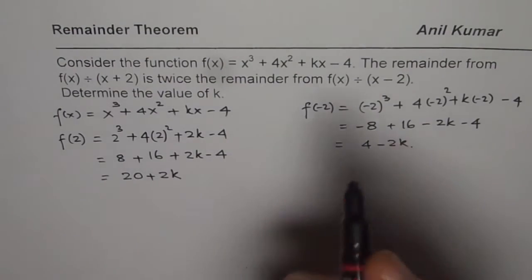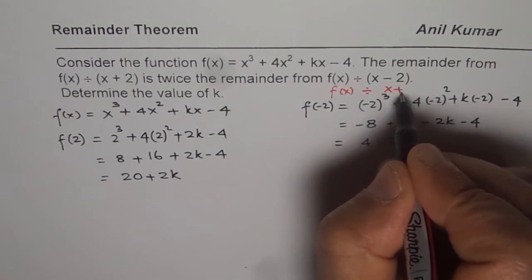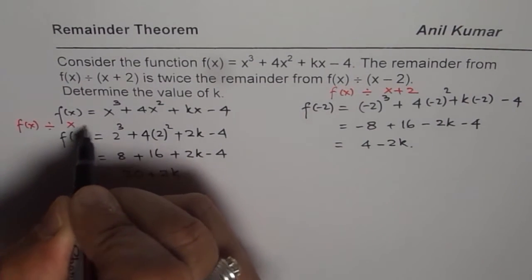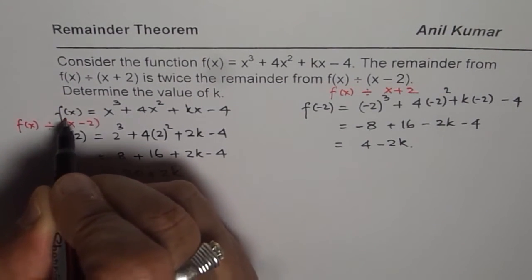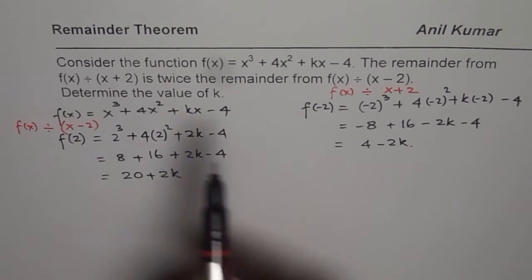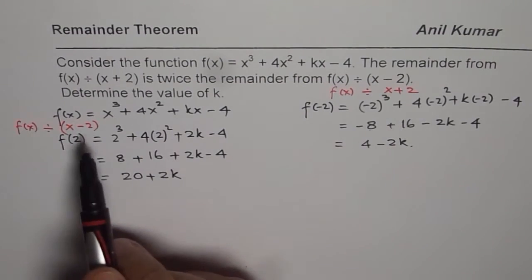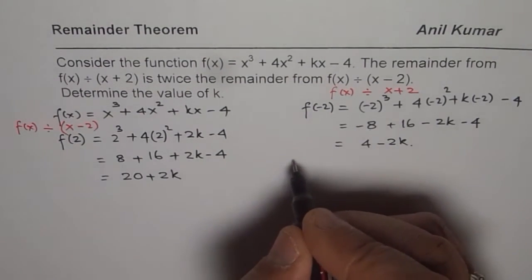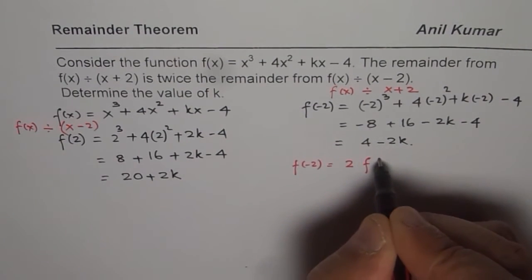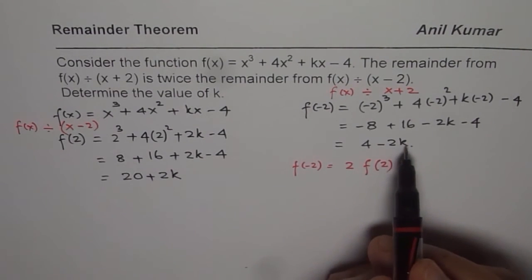So this is the remainder when you divide f(x) by x plus 2, and this is the remainder when you divide f(x) by x minus 2. The problem states that the remainder from f(x) divided by x plus 2 is twice the remainder from f(x) divided by x minus 2. So what we are given is that f of minus 2 equals 2 times f of 2. Given this, we can find the value of k.